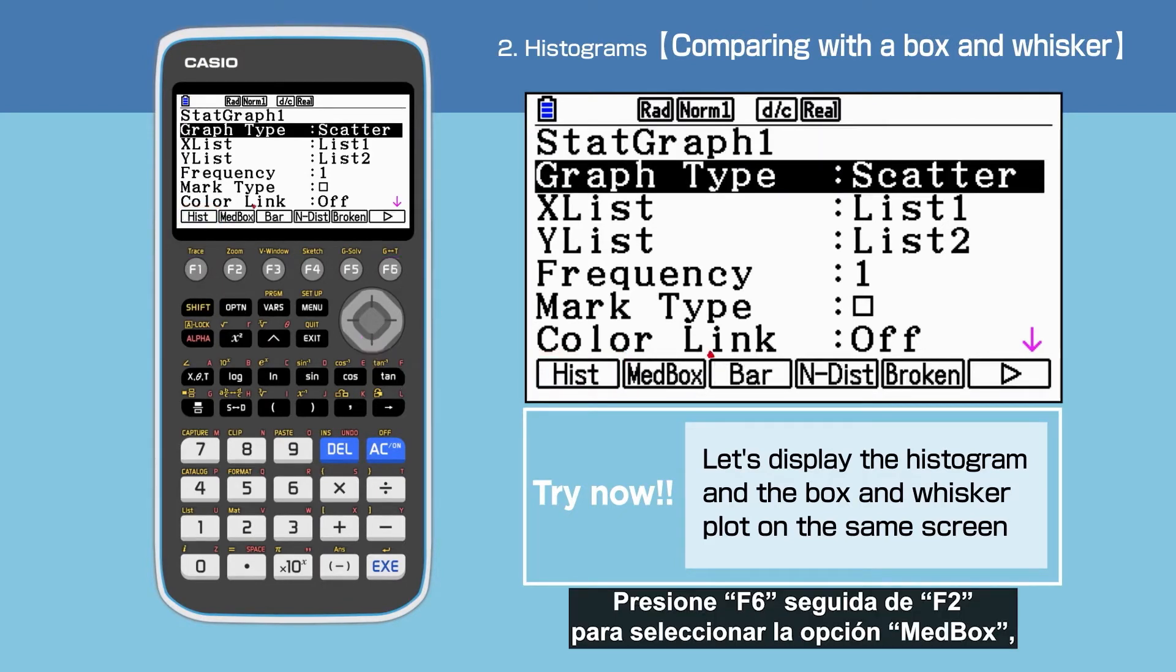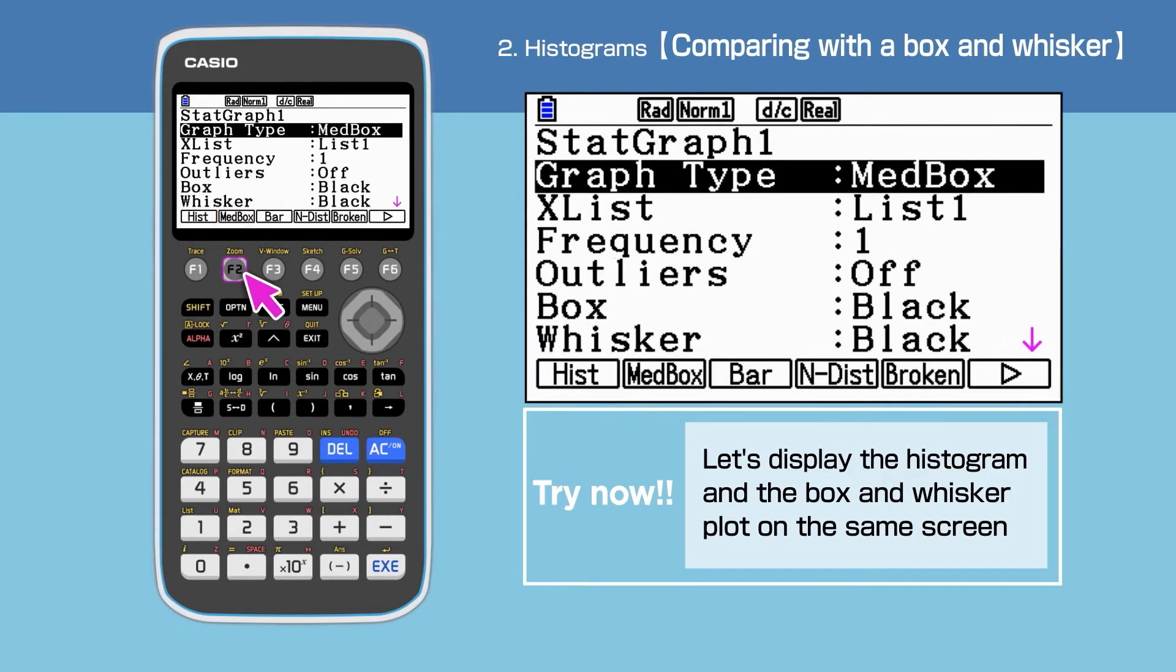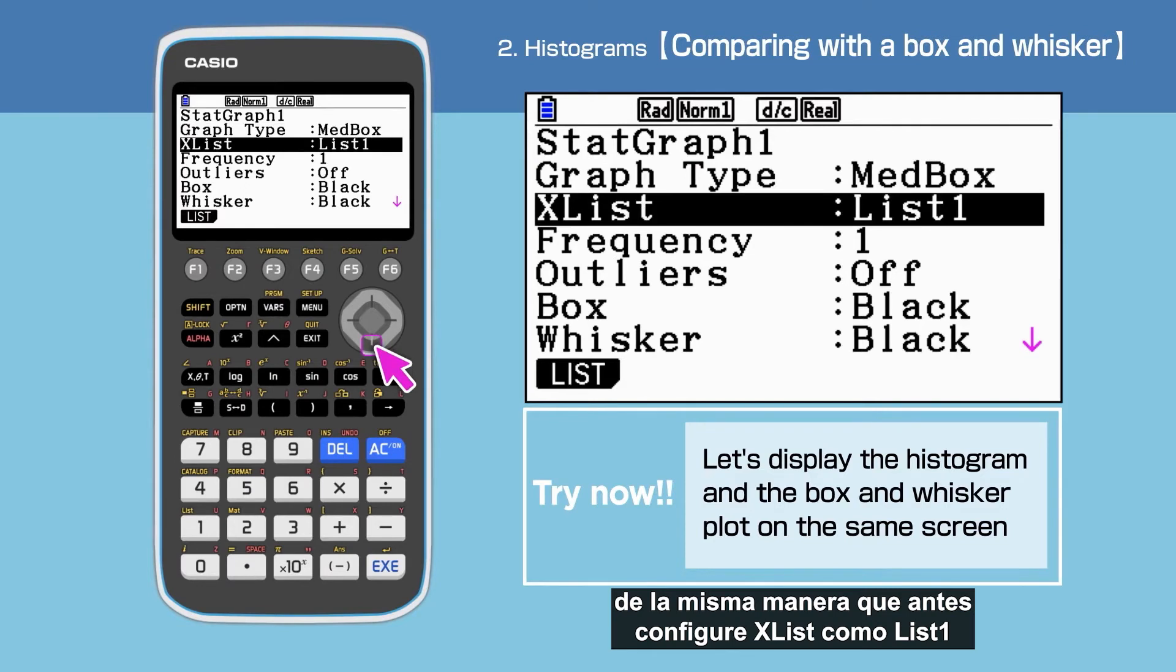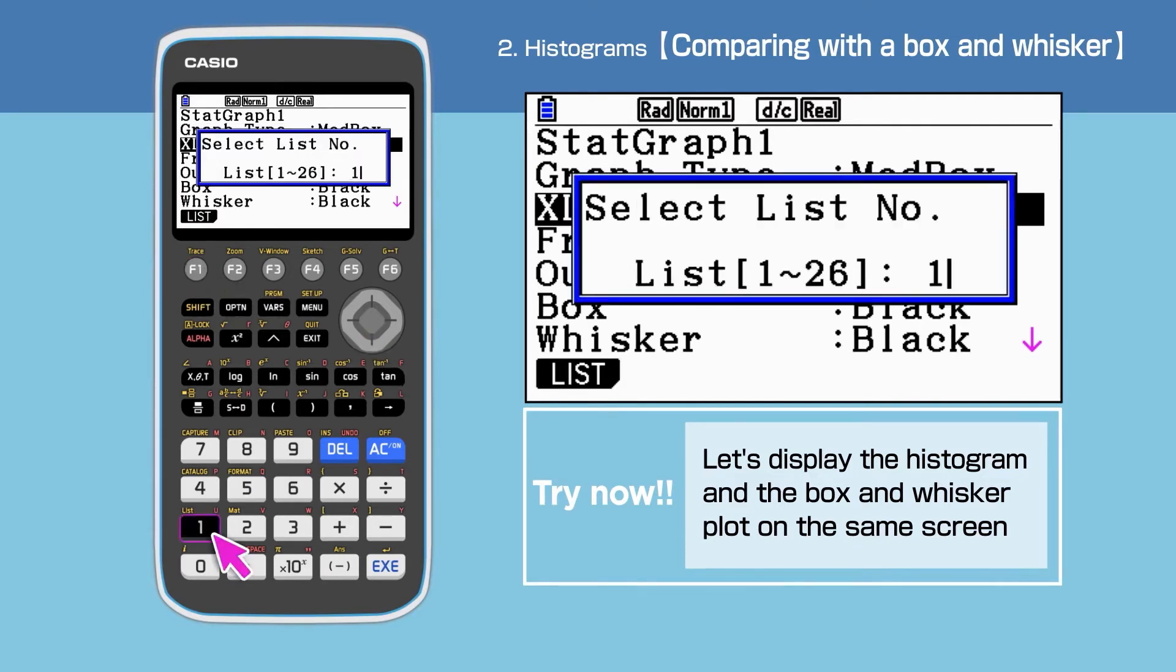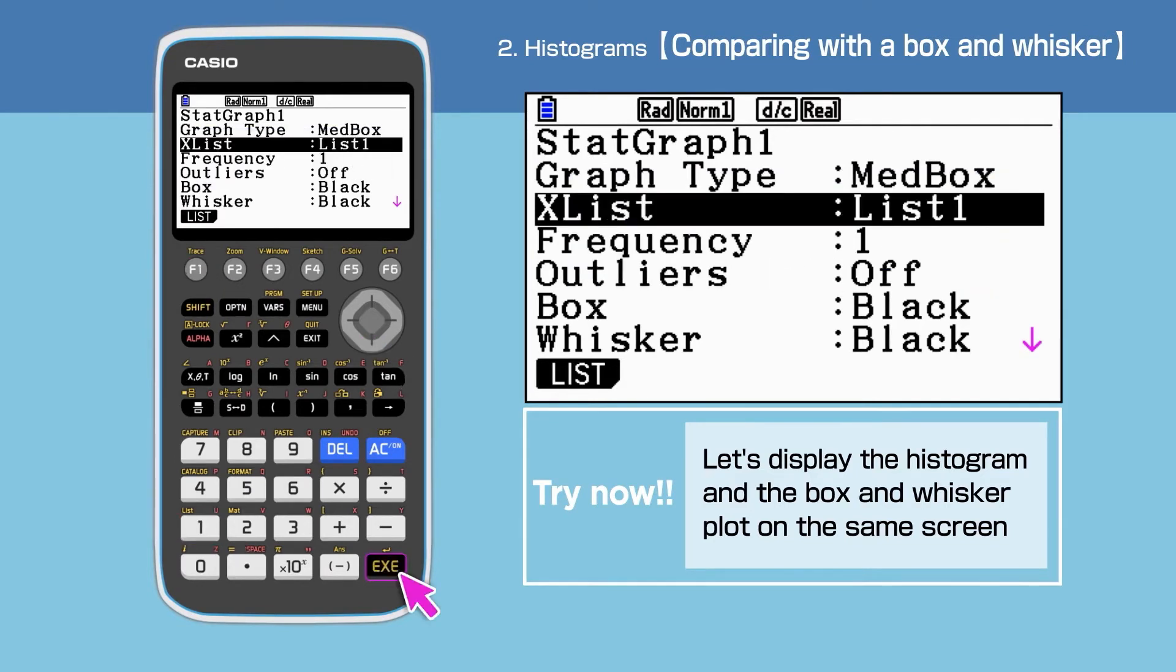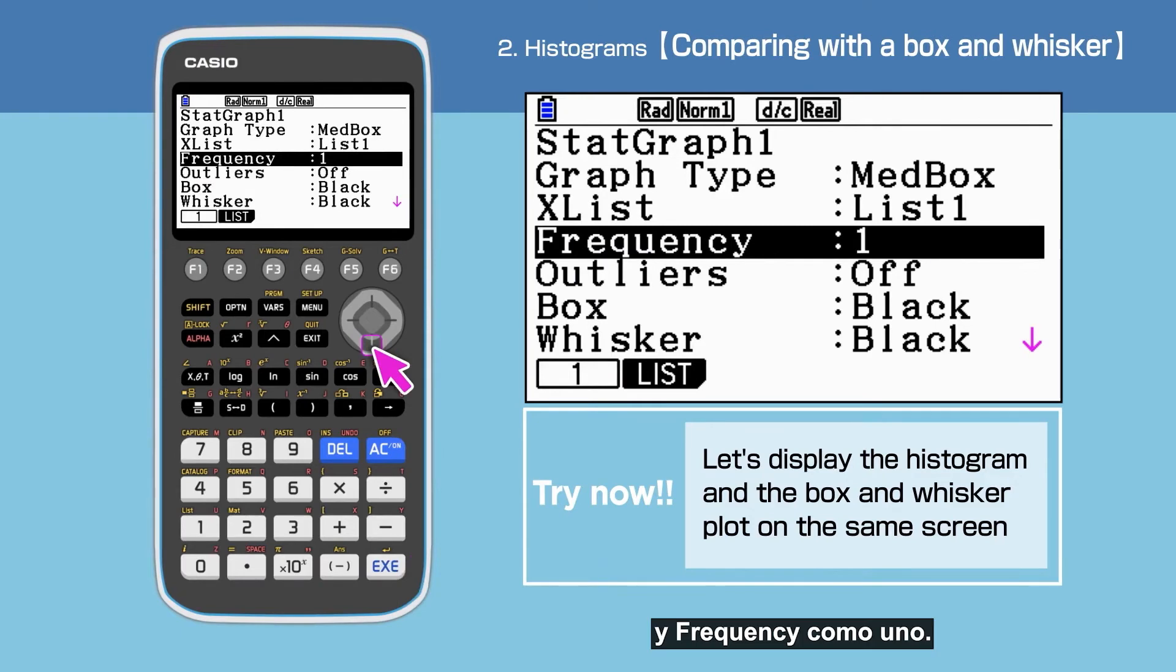Press F6, then F2 to select MedBox. Just like before, X list is list 1, and Frequency is 1.